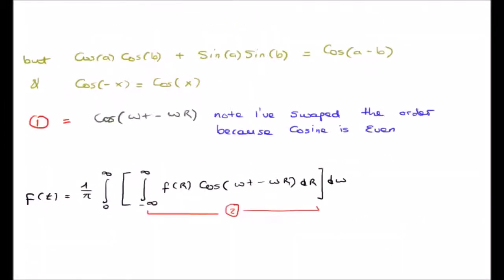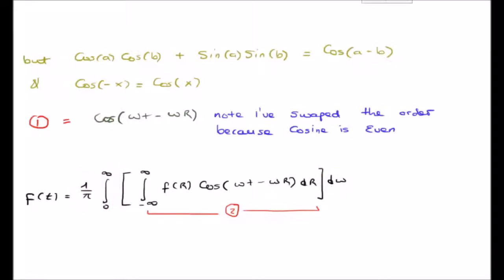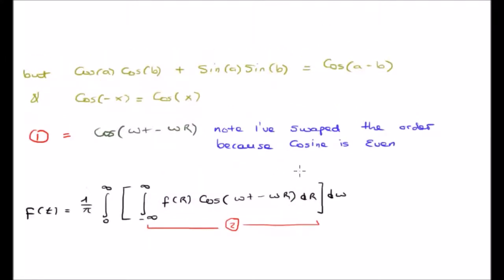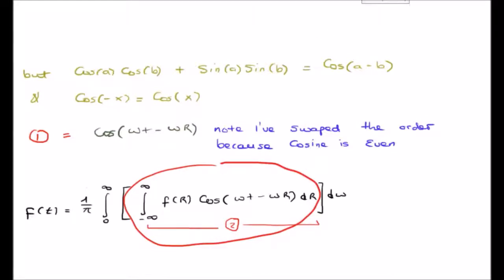We can now rewrite the entire equation. We still have 1 over pi and the zero to infinity integral with respect to omega, but the expression in the middle is rewritten as f(r) multiplied by cosine(ωt − ωr), which we integrate with respect to r. I'm going to call the expression in the middle, with the infinite integral, expression number two.